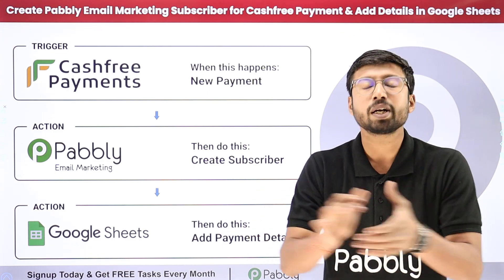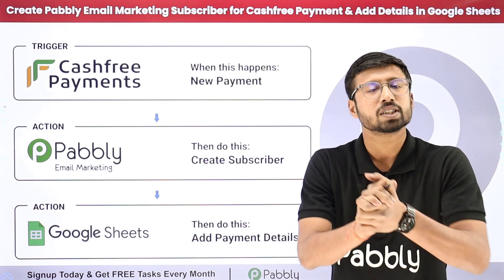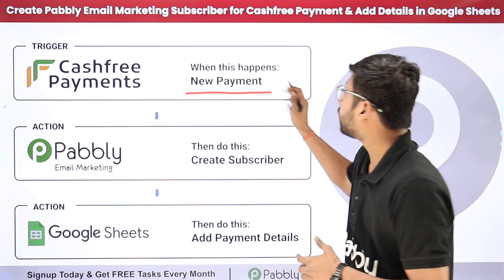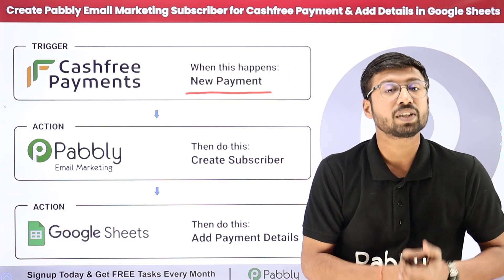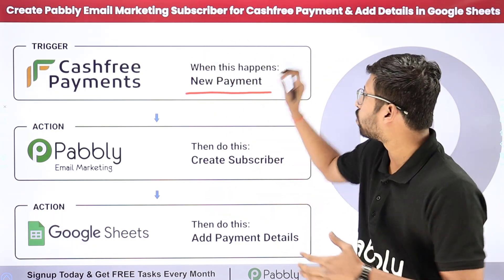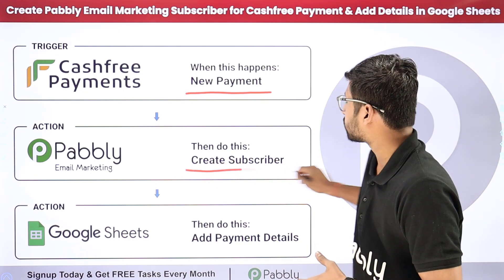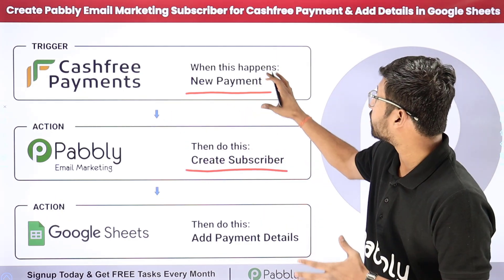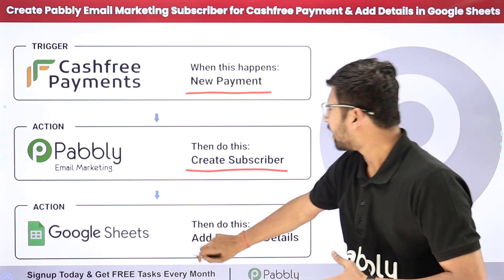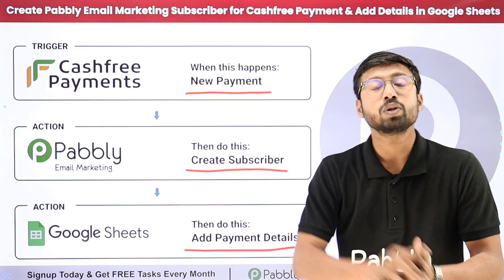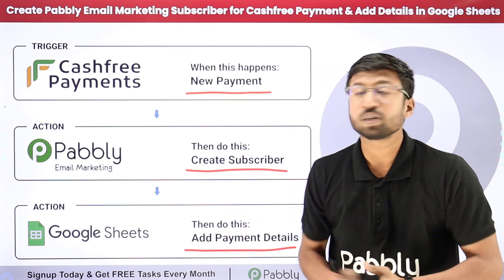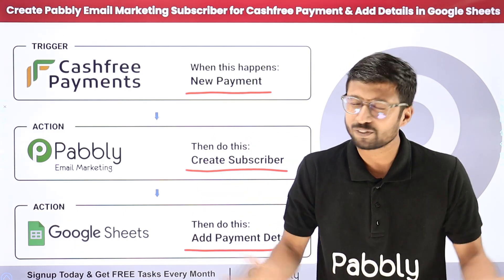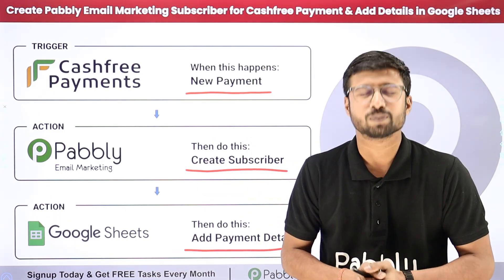You can completely automate this process with the help of Pabbly Connect. In this automation, whenever we receive a new payment in CashFree, automatically with the same details we are going to add that customer as a subscriber in Pabbly Email Marketing, and also add the details of the same payment as a new row in our Google Spreadsheet. If you want to learn how to set up this complete automation, just come with me to my screen.